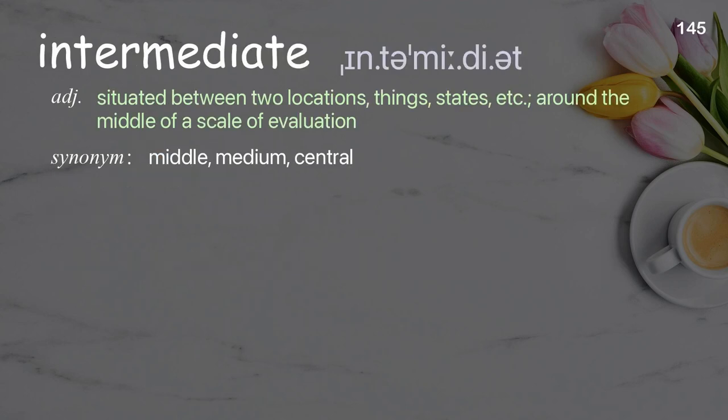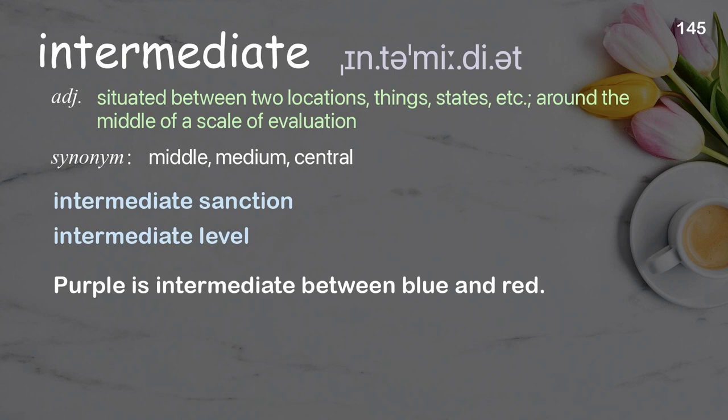Intermediate: situated between two locations, things, states, etc.; around the middle of a scale of evaluation. Examples: intermediate sanction, intermediate level. Purple is intermediate between blue and red.